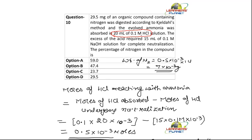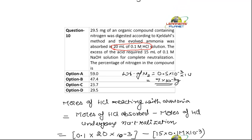To find the percentage of nitrogen, it will be 7 into 10 to the power minus 3 divided by 29.5, multiplied by 100. So the percentage of nitrogen comes out to be 23.7%. That's it.